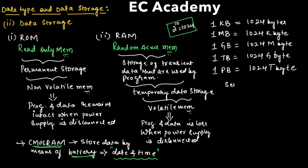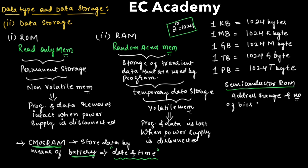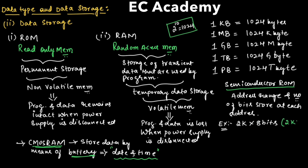If we consider semiconductor ROM, its capacity is usually specified in terms of address range and number of bits stored at each address. For example, 2K × 8 bits has a capacity of 2 kilobytes, and 4K × 8 bits has a capacity of 4 kilobytes.